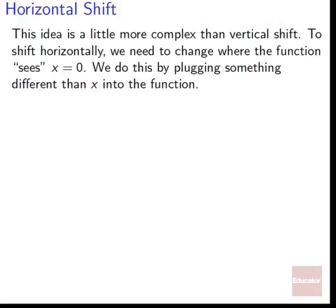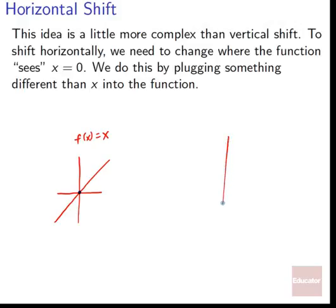Horizontal shift is a little more complex. To shift horizontally, we need to change where the function sees x = 0. We do this by plugging something different than x into the function. Think of a normal line — its home base is where it crosses the axis. We could shift it over to the right by moving that home base, changing where the effective x = 0 is seen.